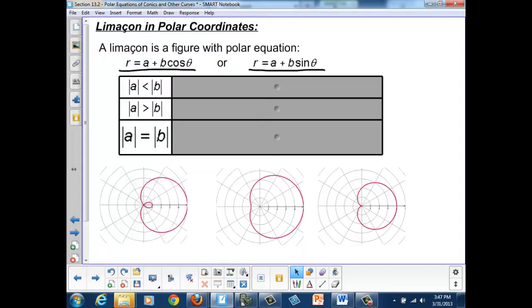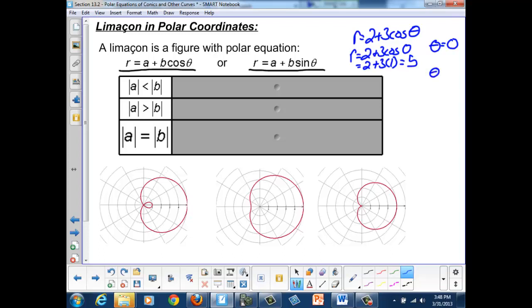If we look at those equations, my equation was r equals 2 plus 3 cosine theta. When theta was equal to 0, then my equation becomes r equals 2 plus 3 cosine 0, or 2 plus 3 times 1, or 5. But at theta equals 180, then my equation becomes r equals 2 plus 3 cosine 180, or r equals 2 minus 3, since cosine of 180 is negative 1. And I end up with negative 1.